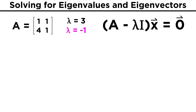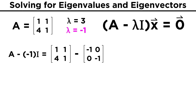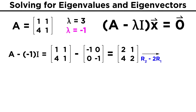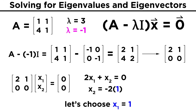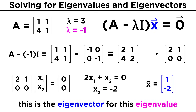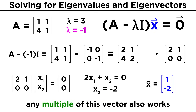Now let's do the same thing for lambda equals negative one. Plugging negative one into A minus lambda I — subtracting negative one from the main diagonal of A — we find the result to be [2, 1; 4, 2]. We subtract two times the first row from the second row, leaving two and one in the first row, making our equation two X1 plus X2 equals zero, or X2 equals negative two X1. Choosing X1 equals one gives X2 equals negative two, making our eigenvector [1, -2]. So the eigenvectors for lambda equals negative one are vectors with their second element equal to negative two times the first element.